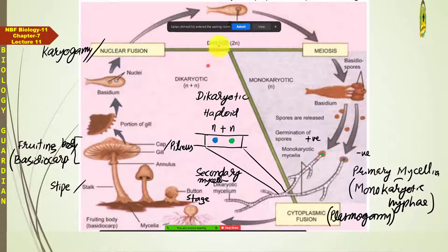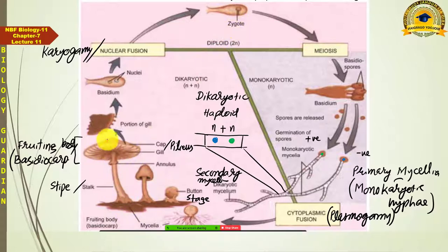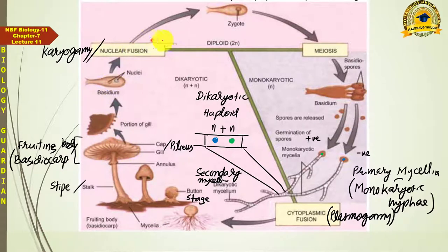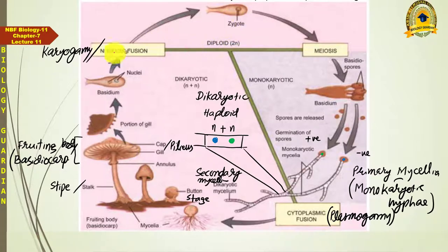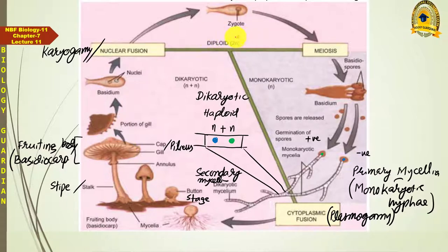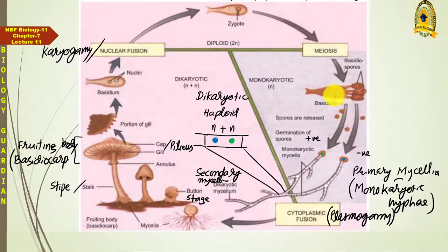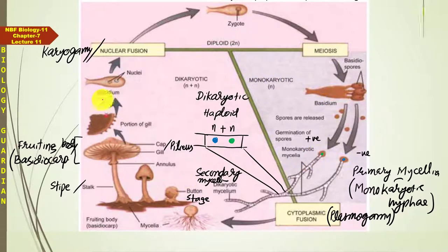This includes the underground mycelium, the stem-like part, and the cap-like pileus. After this, the third phase is the diploid phase, which starts after nuclear fusion and is very brief. As soon as the diploid zygote forms, meiosis immediately occurs, and then the monokaryotic phase begins again — completing the life cycle of the mushroom.